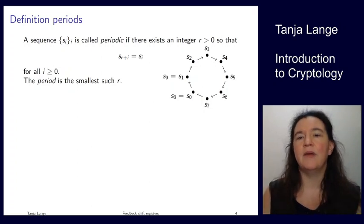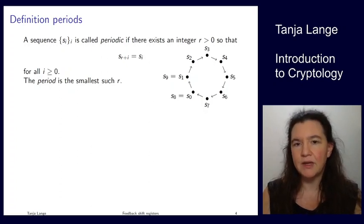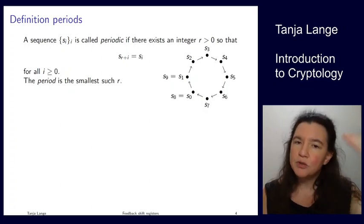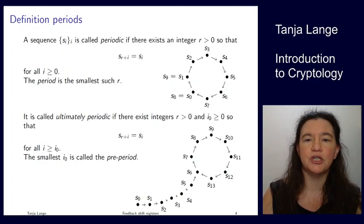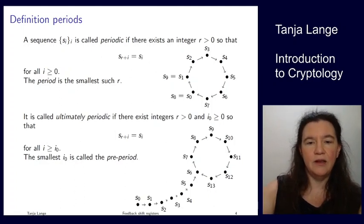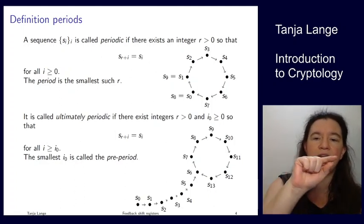So for instance here, I'm having a period of 8. I could also say, after 16 times, I'm back at 0, after 24 times, but the smallest number which is larger than 0 is 8, after which I'm back here.